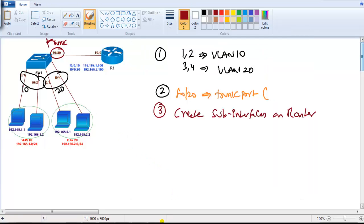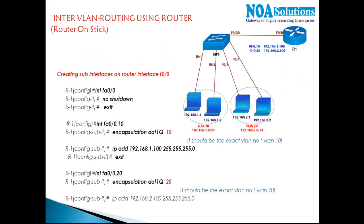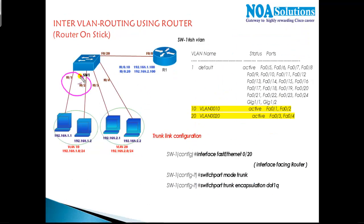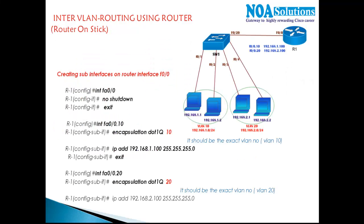To summarize inter-VLAN routing using sub-interfaces: ensure the ports are assigned to their respective VLANs, configure a trunk link between the switch and router, and create sub-interfaces on the router. When troubleshooting, verify the correct VLAN number is used in the 'encapsulation dot1q' command on the right sub-interface, and ensure the gateway IP address is on the same network as the corresponding VLAN.